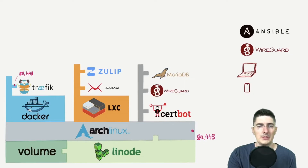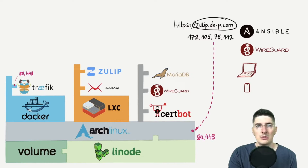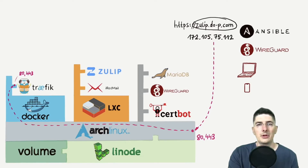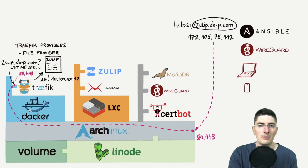With port mappings in place, how will a network packet reach Zulip, for example? If someone requests https://zulip.do-p.com, it will first resolve to the public IP of this VPS. The HTTP request will come to this interface on port 443, it will be routed to Traefik, and then what? That's where Traefik providers come into play. In the case of Linux containers, the file provider. We'll have a configuration file which Traefik will read, and that file will tell it that when something asks for zulip.do-p.com, Traefik should route that to the Zulip LXC.